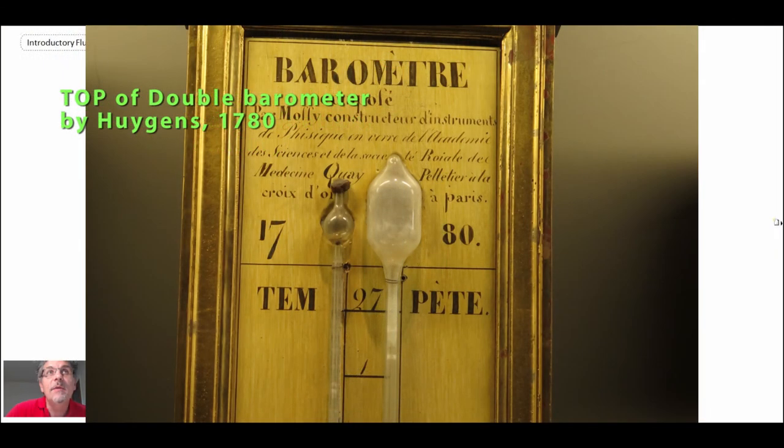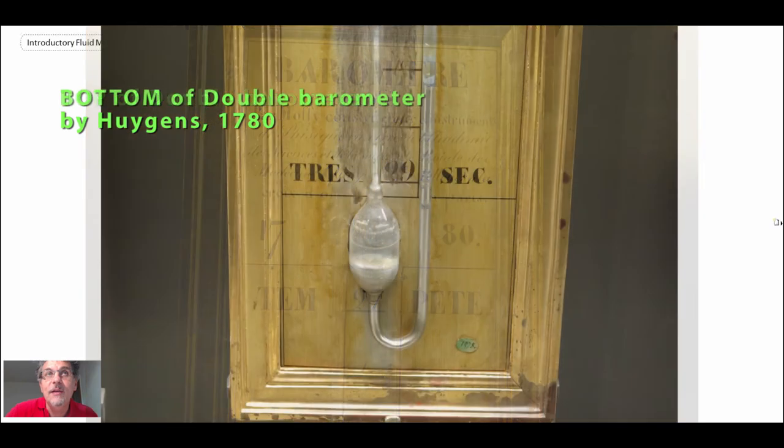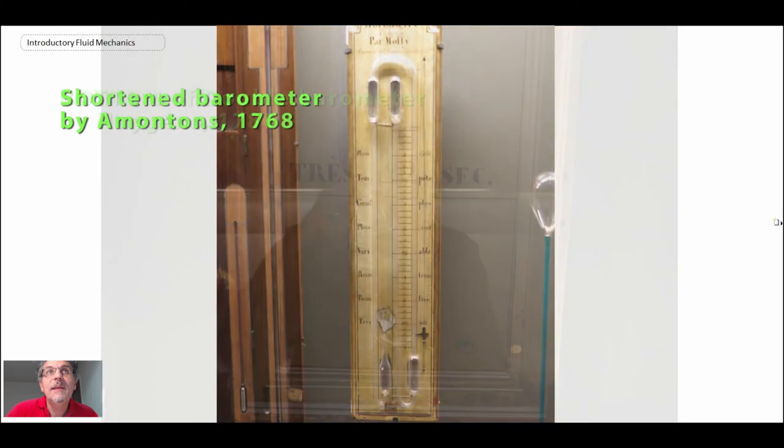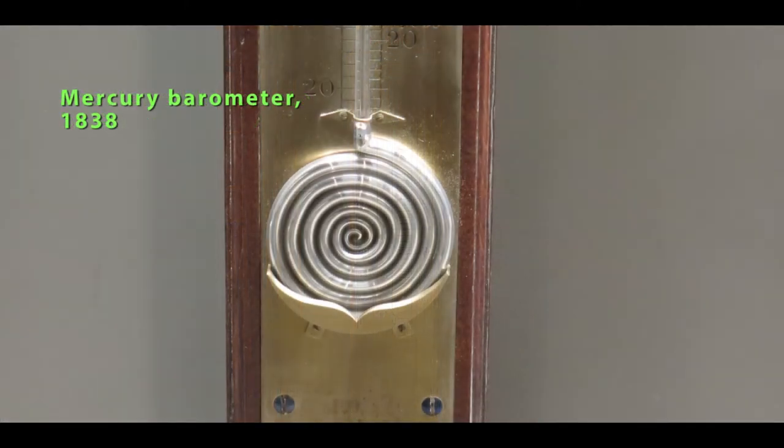This is a top of a double barometer by Huygens from 1780. And there you can see the bottom of the double barometer by Huygens. This is a compact or shortened barometer that was developed in 1768. This is a spiral barometer from 1838.